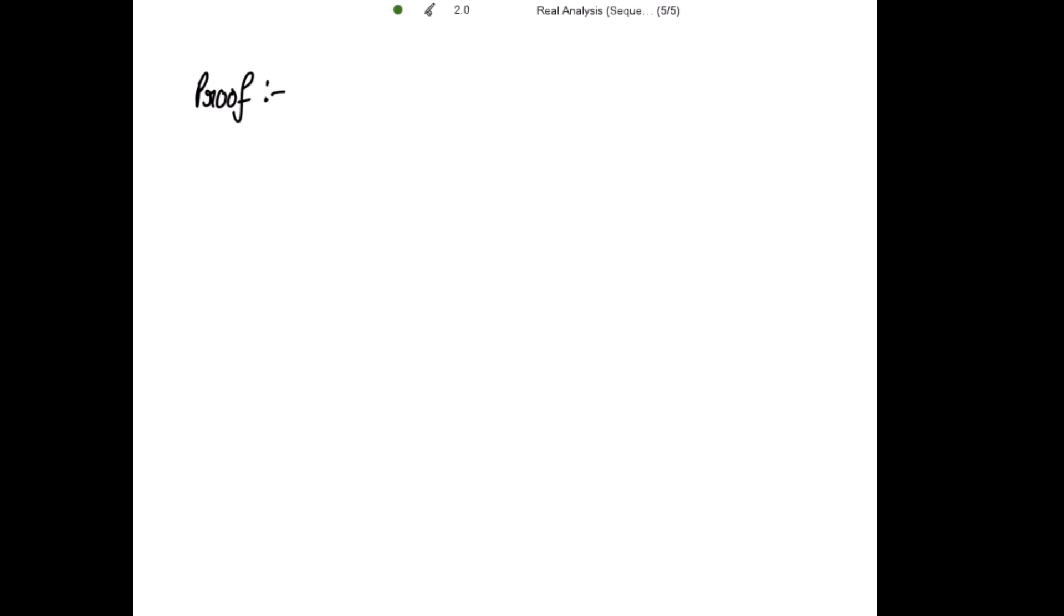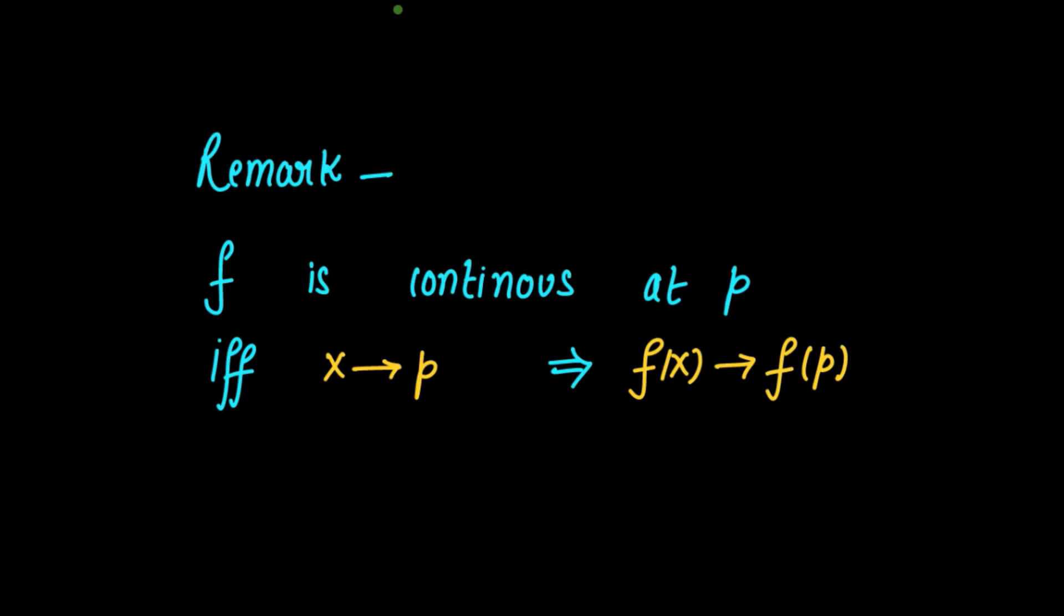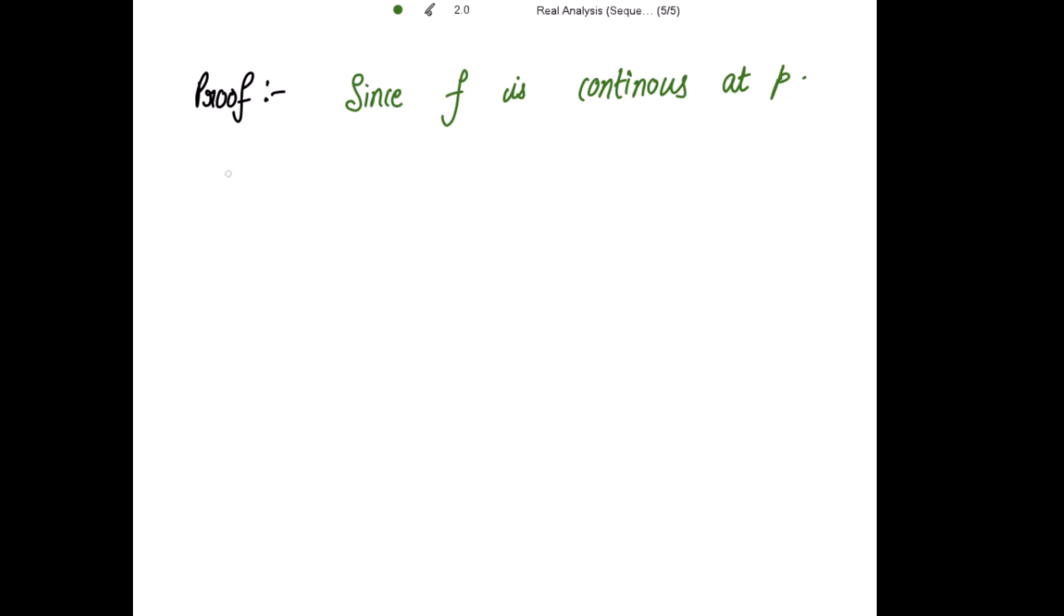Let's start with the proof. Now it is given to us that since f is continuous at p and from this remark, f is continuous at p if and only if x is tending to p implies f(x) is tending to f(p). So therefore x is tending to p which implies f(x) is tending to f(p) where this p is a point in E.